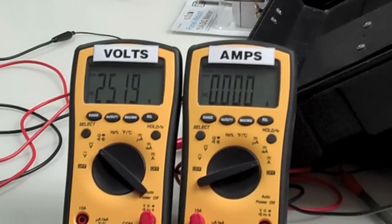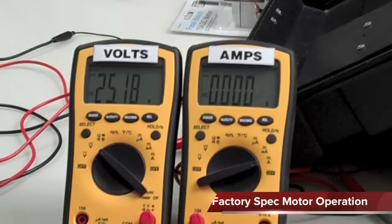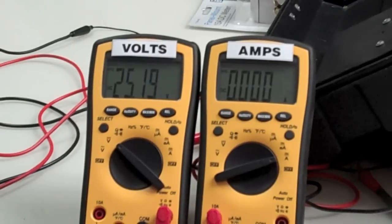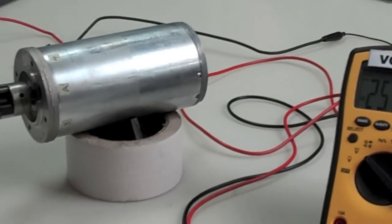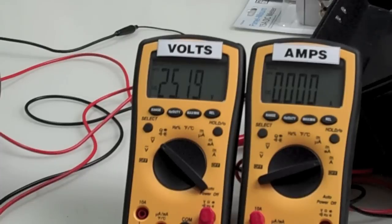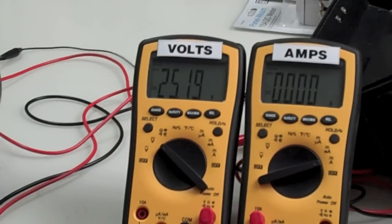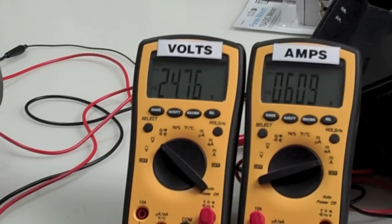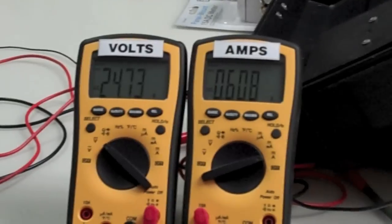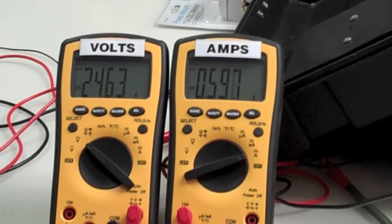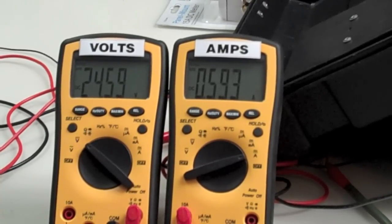First of all, we'll show you how it runs with its design power input. On the voltmeter right now you can see 25.19 volts, zero amps because we haven't started the motor. It's got a lot of torque so I need to hold it. There we go, you can see that it's drawing 0.598 amps. It's dropping down because these batteries are really pulling down, they're not very charged, but usually it's about 0.6 amps.